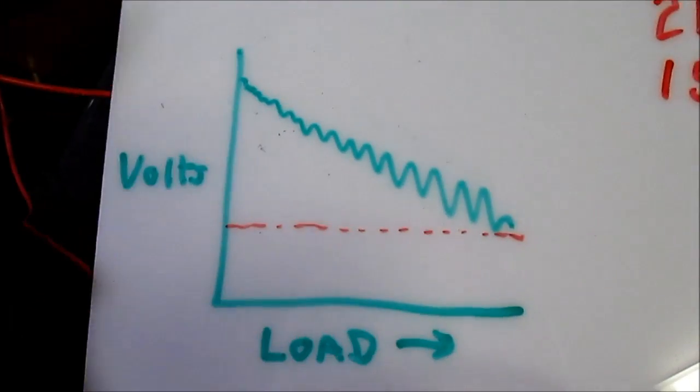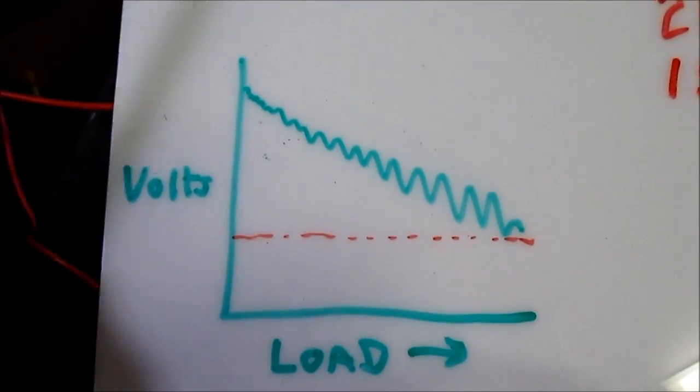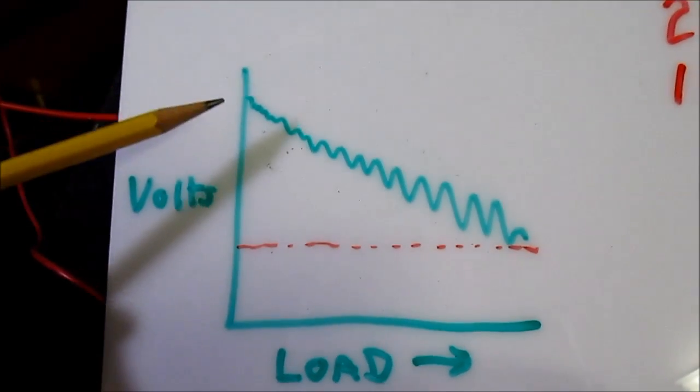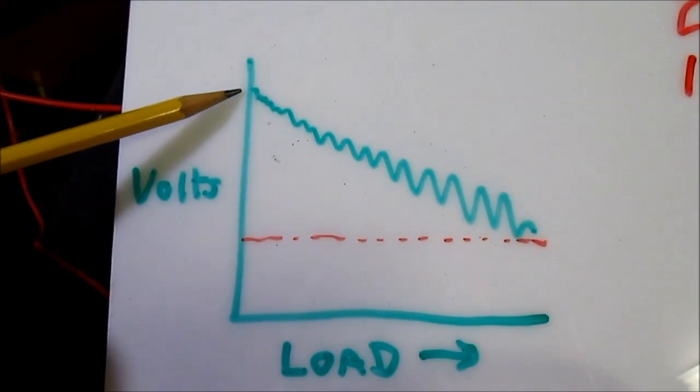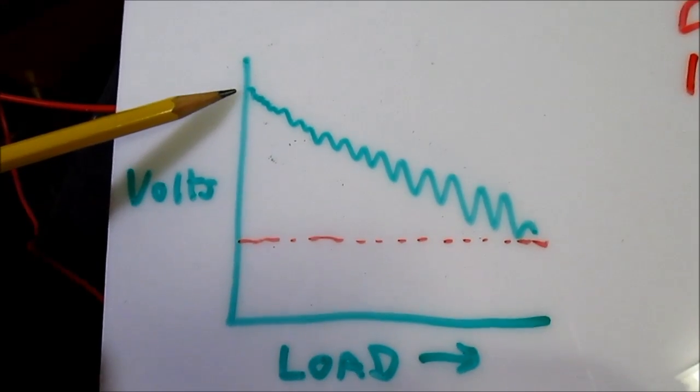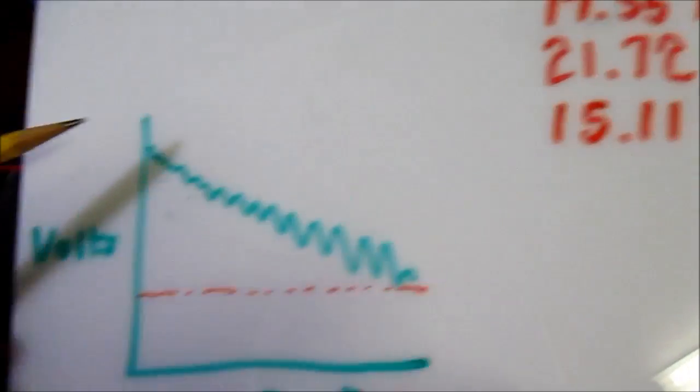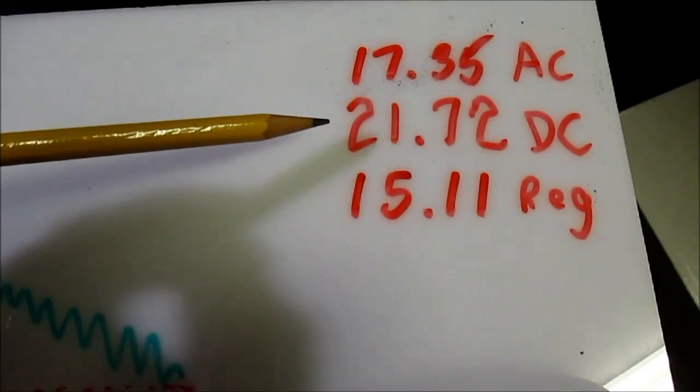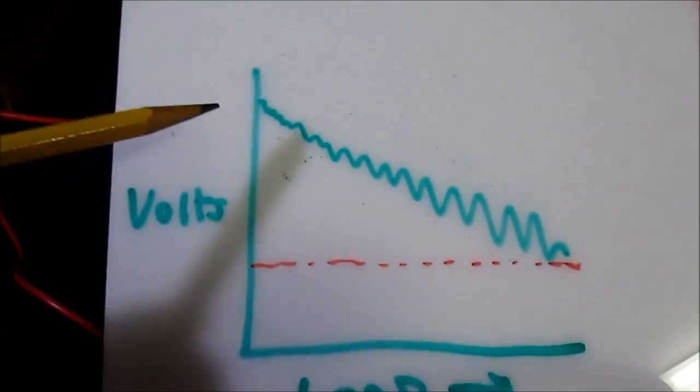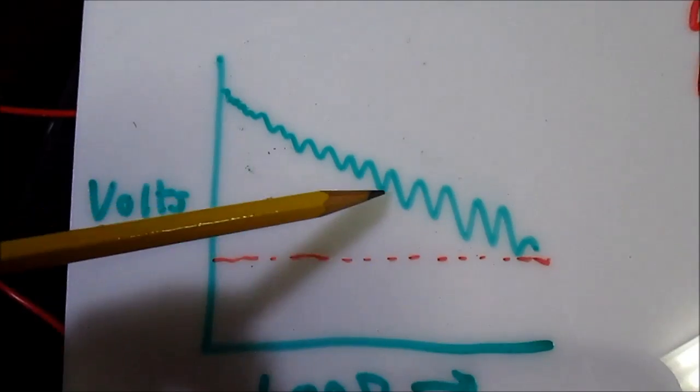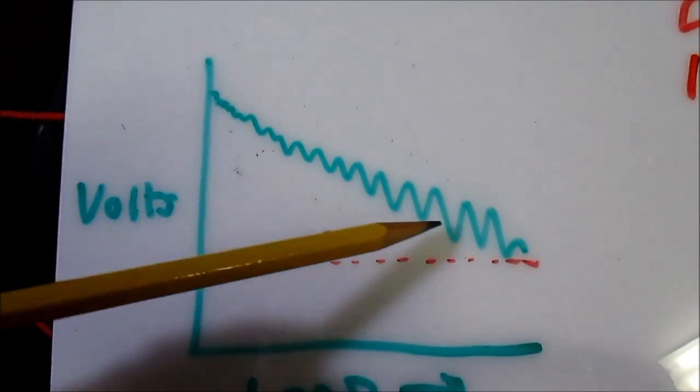So when you design a regulator, the unloaded DC voltage going into that regulator is going to be quite high. Like we found it was 21.72 volts. And as we load that down, it's going to pull that voltage down.